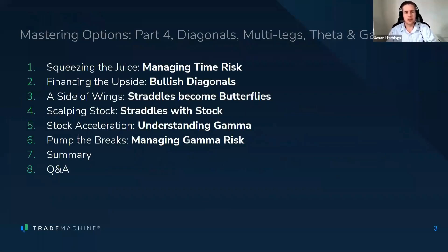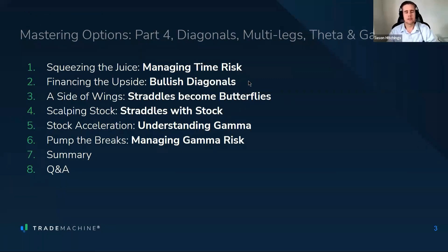Here's a breakdown of how we're going to cover things today. We're going to talk about managing time risk — how options lose value over time and strategies to prevent that. We're going to get into diagonals, combining vertical spreads with time spreads. We'll dive deeper into straddles and strategies for taking advantage of them if you're looking to stay delta neutral, how you can still make money even if the stock just zigzags back and forth, and how you can have greater chances of profitability. Finally, we'll dive deeper into understanding not only delta, but how delta changes over time.